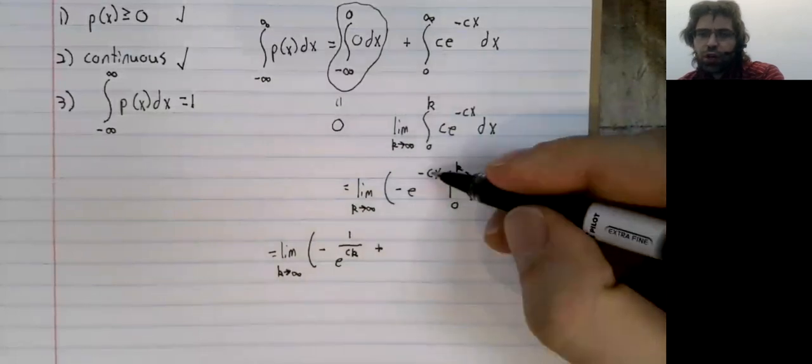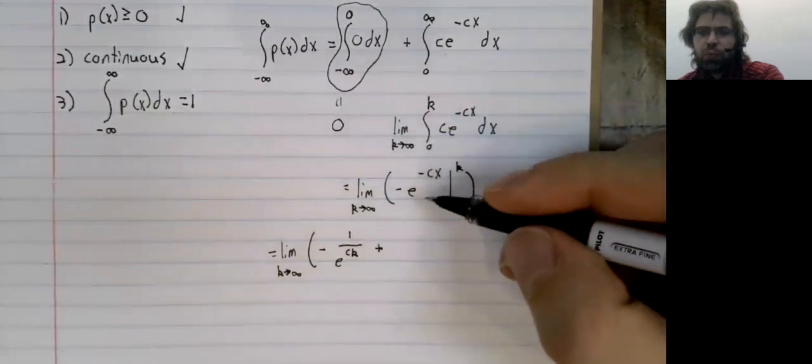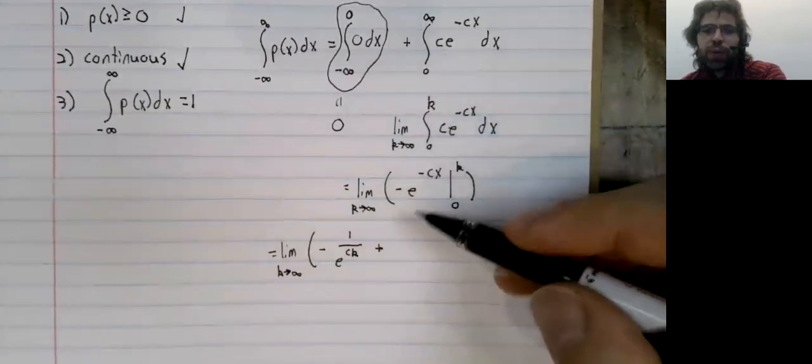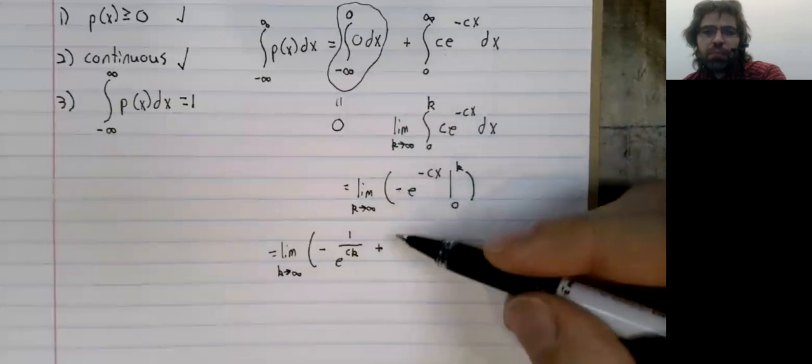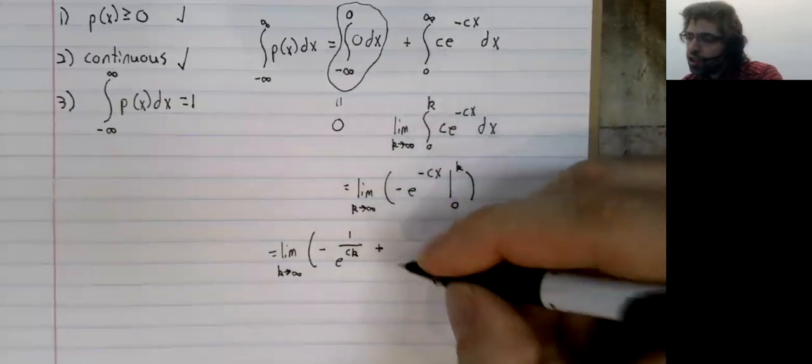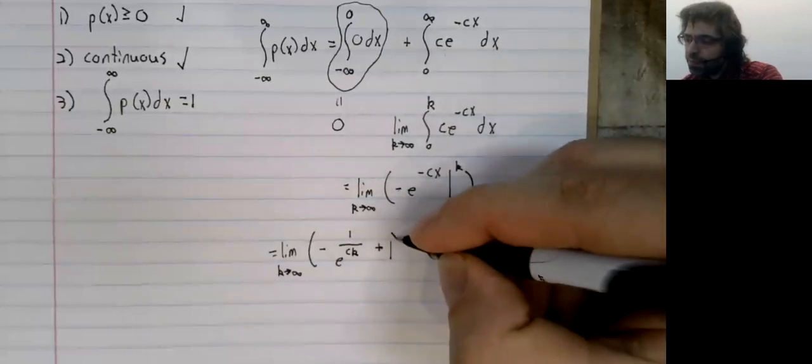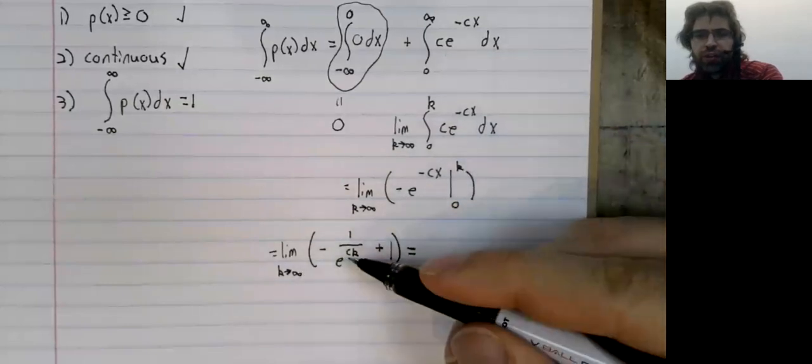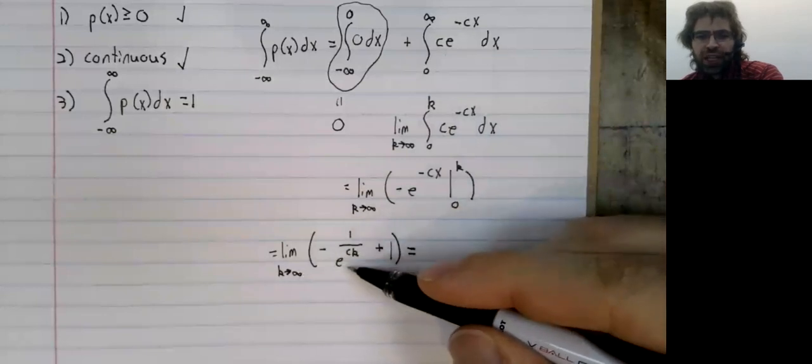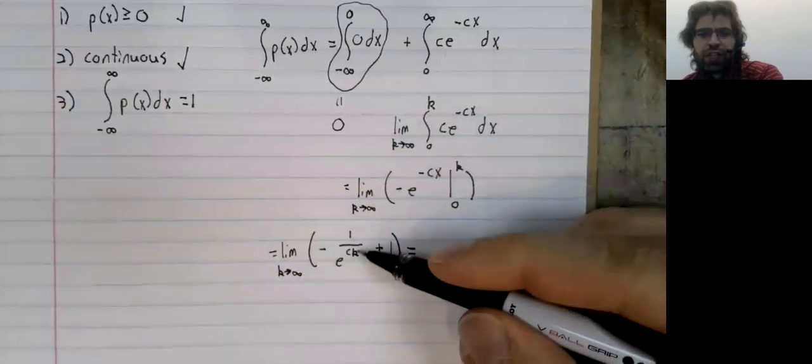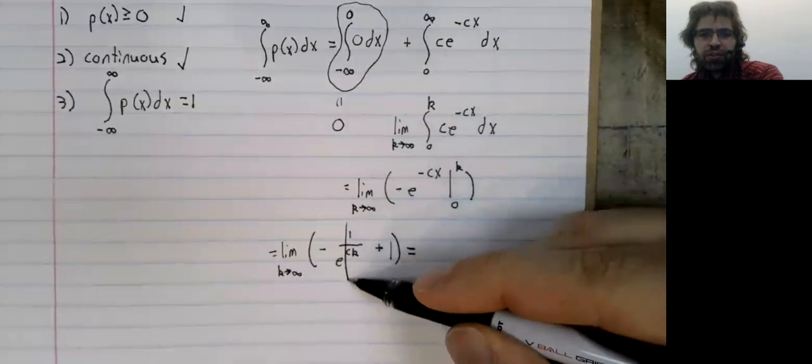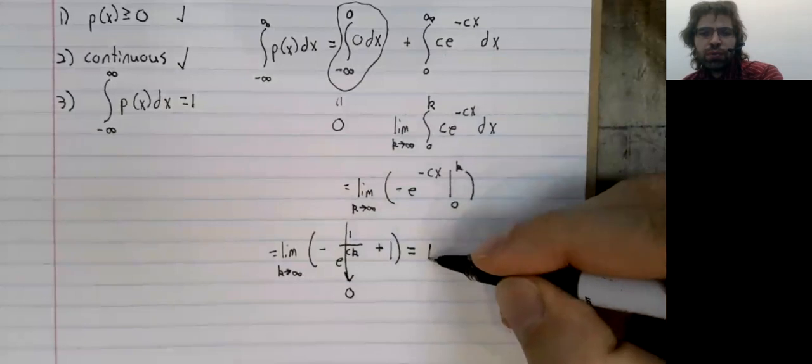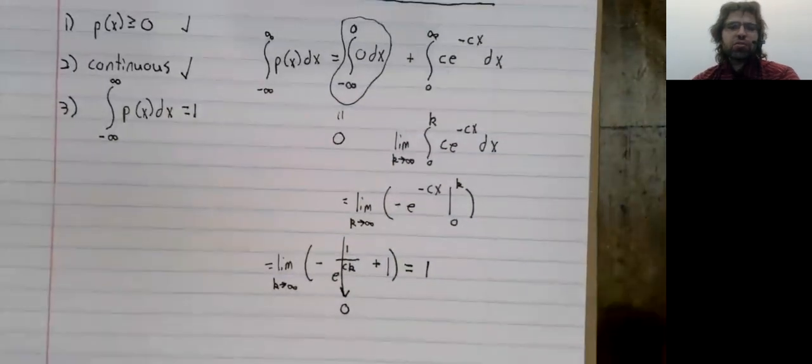When we stick zero in here, we get one. E to the zero is one. We're subtracting a negative number, hence addition. And as k goes to infinity, the denominator goes to infinity, so the fraction goes to zero. And that's one.